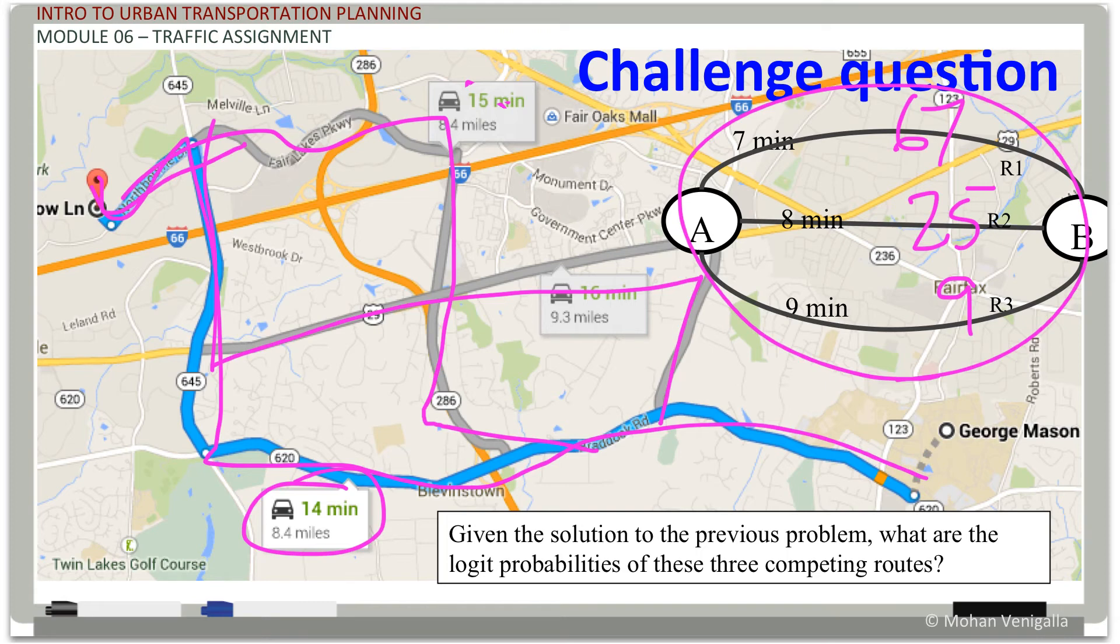Very simple. If you look at these travel times, they're 14, 15, 16 minutes, 7, 8, 9 minutes. That's why I deliberately chose this. Adding a constant to utility functions is not going to change the property of the choice probabilities at all. So, essentially, if you subtract 7 from this, each one of the travel times, your problem is that, essentially, reduces to what you just solved.